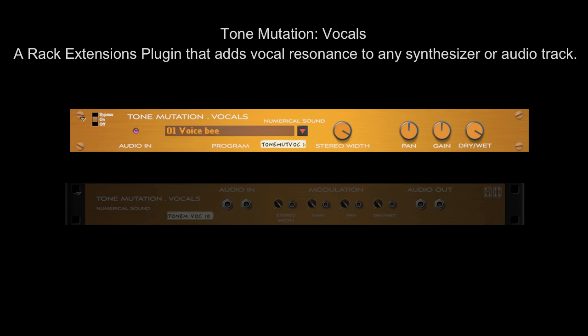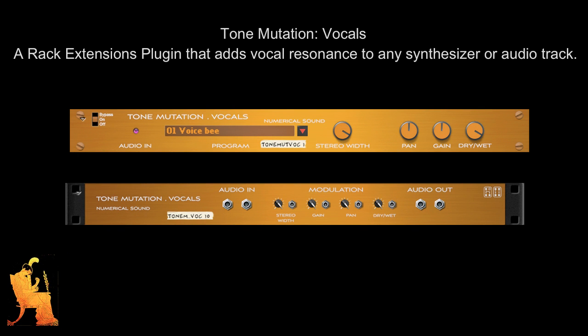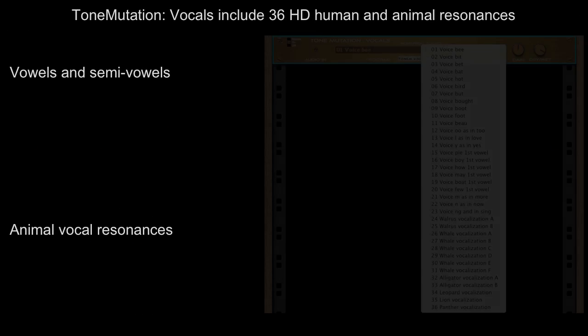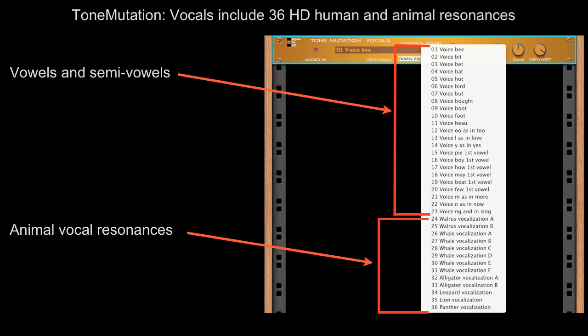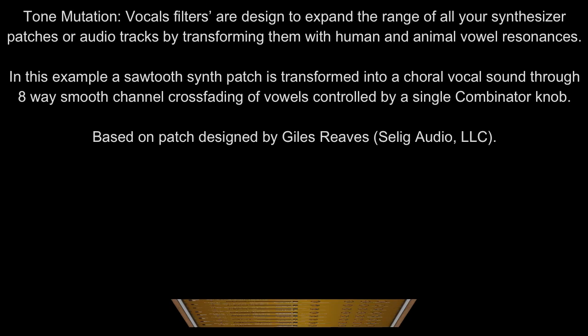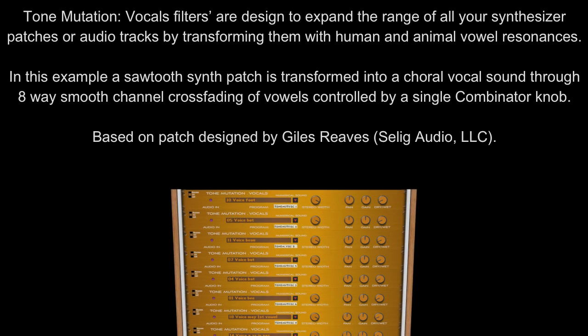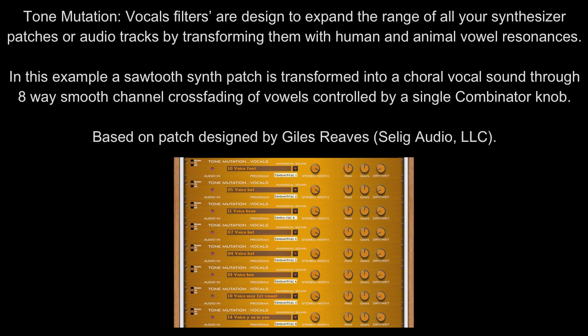Numerical Sound releases Tone Mutation Vocals, a rack extension plug-in that adds vocal resonance to any synthesizer or audio track. Tone Mutation Vocals includes 36 high-definition human and animal resonances. The vocal filters are designed to expand the range of all your synthesizer patches or audio tracks by transforming them with human and animal vocal resonances.